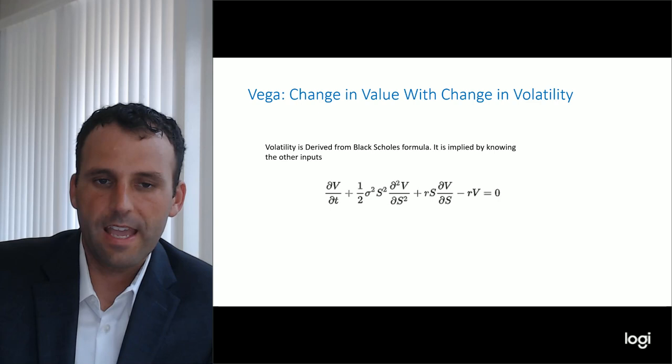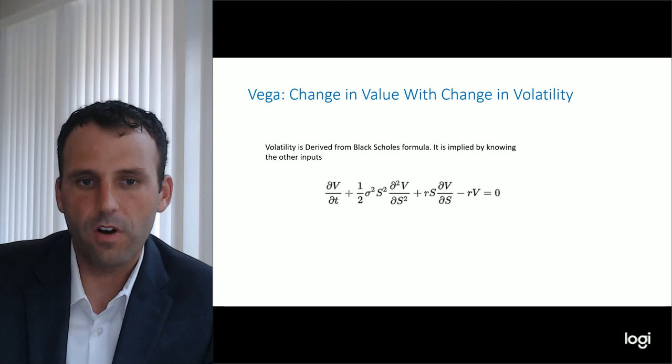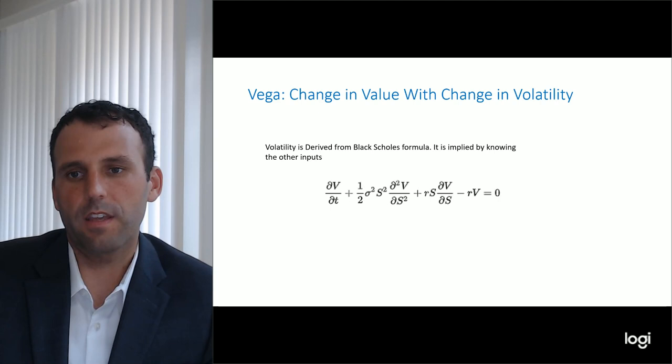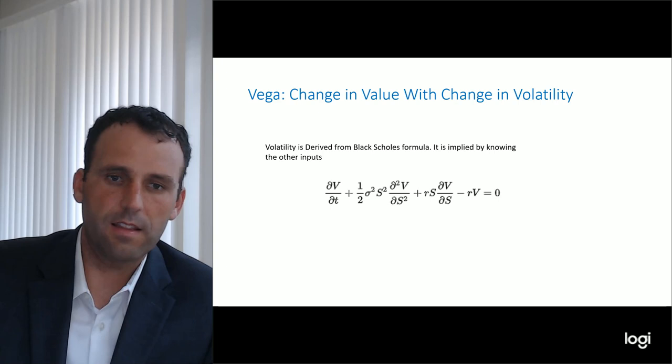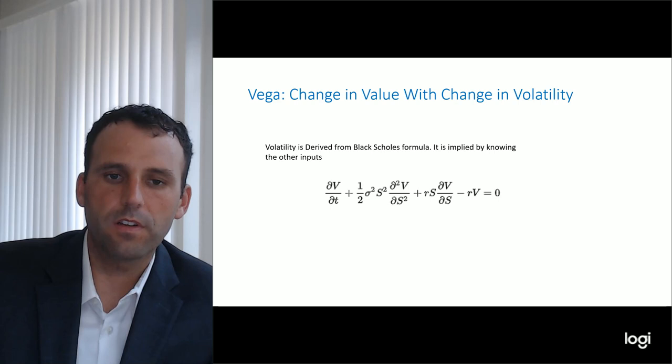Volatility is basically a measure of standard deviation of price action, or anticipated standard deviation. For example, if you're long a call on a company that has a lot of takeover rumors, it's going to have a lot more implied volatility because there's the possibility the company gets bought out or the buyout deal fails. It's going to have a lot more volatility than a giant stock in a boring industry with no corporate action.